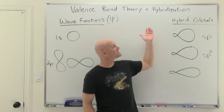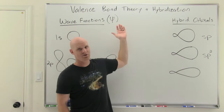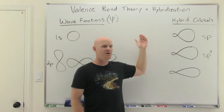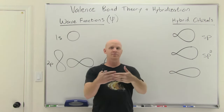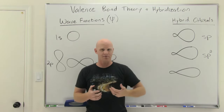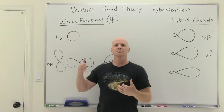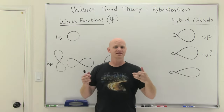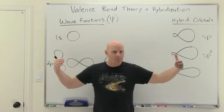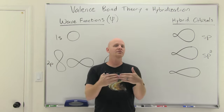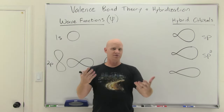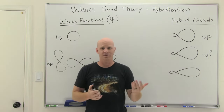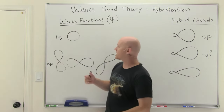So valence bond theory — at the heart of it, it talks about what creates a covalent bond. We like to talk about the sharing of electrons, but this takes a step further and says that atomic orbitals are actually going to overlap, and that's where the electrons are going to be shared. That's kind of the heart of it.